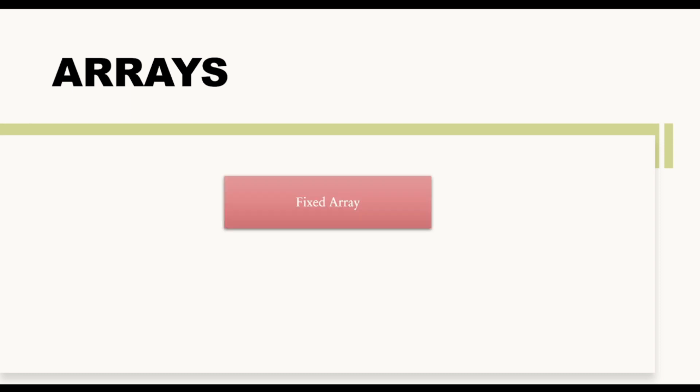In this video we are going to talk about arrays in Solidity. There are basically two types of arrays: first, fixed arrays, and second, dynamic size arrays. In this video we will talk about fixed arrays and in the next video we will talk about dynamic size arrays. Arrays are collections of homogeneous elements.